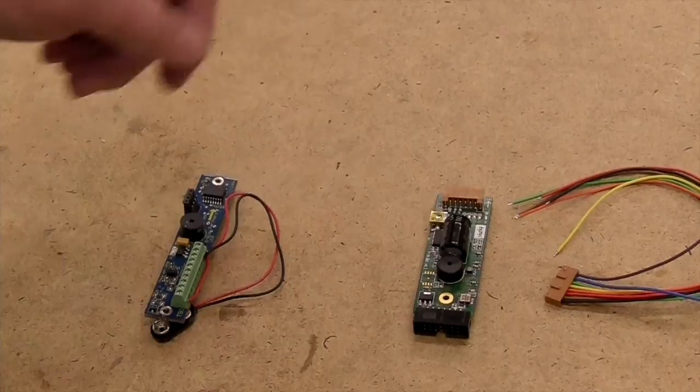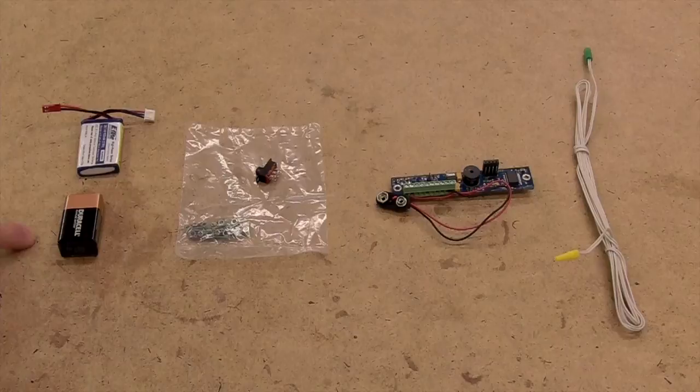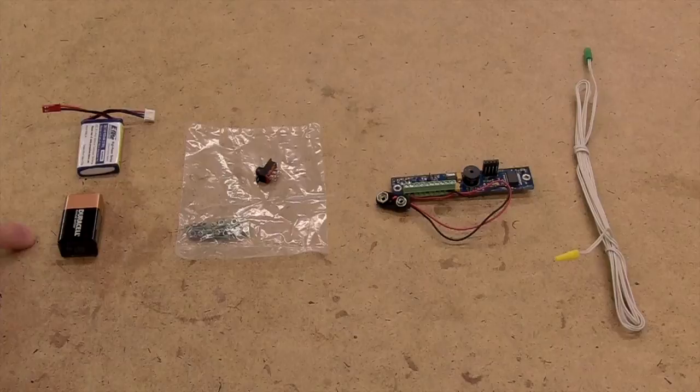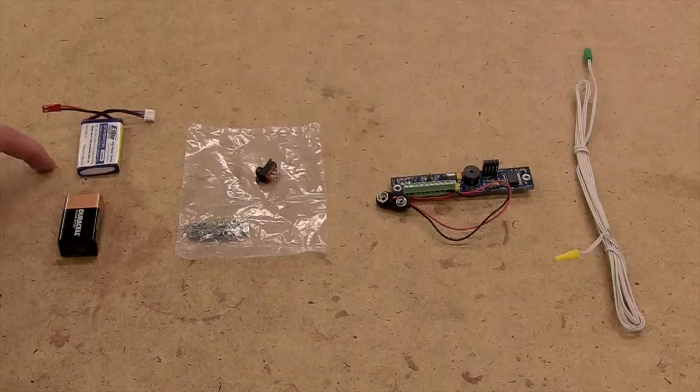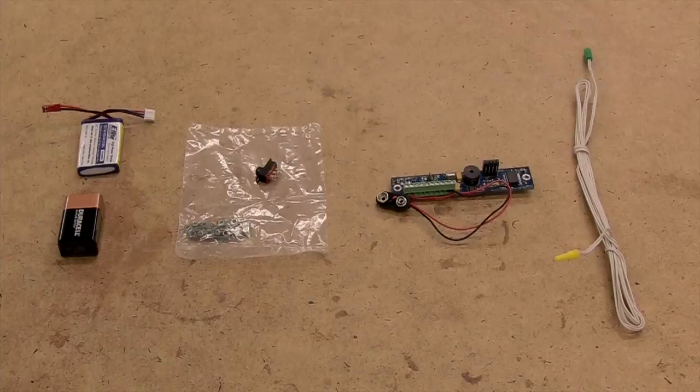So let's talk about what you connect to your altimeter. Obviously, you have to supply it with power. The most common is probably a standard 9-volt battery, but many people are moving to lithium polymer batteries. You can either use a 2-cell or a 3-cell, depending on the voltage requirements. This provides a lot more current in a very small package.